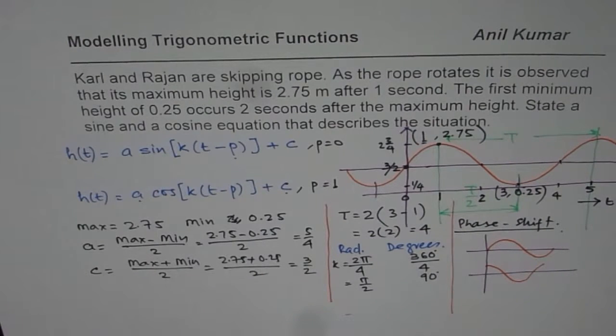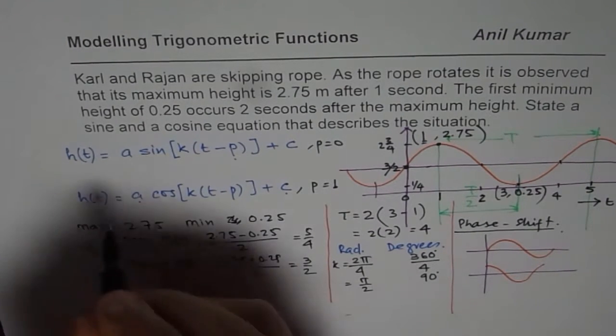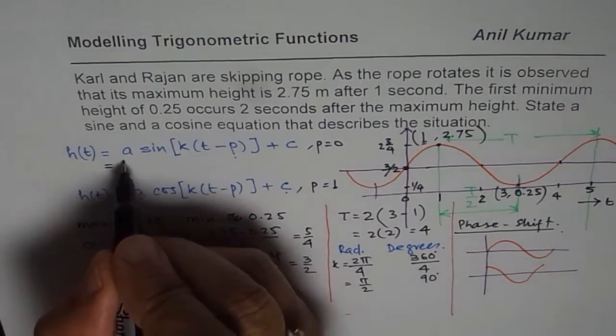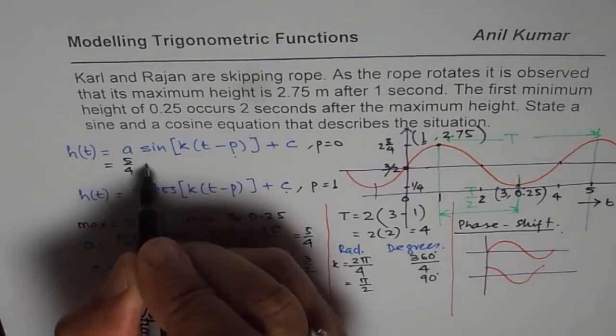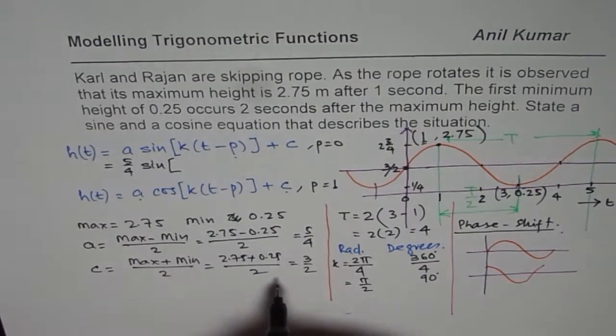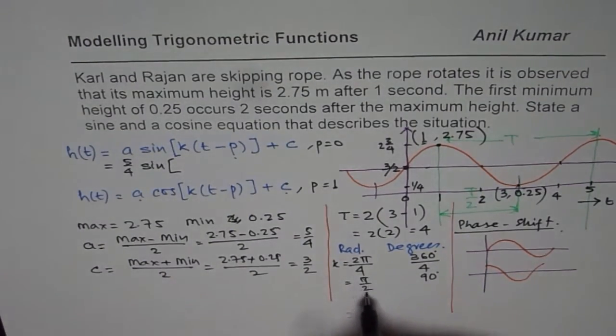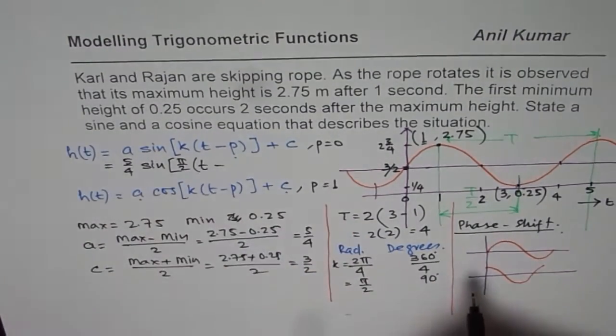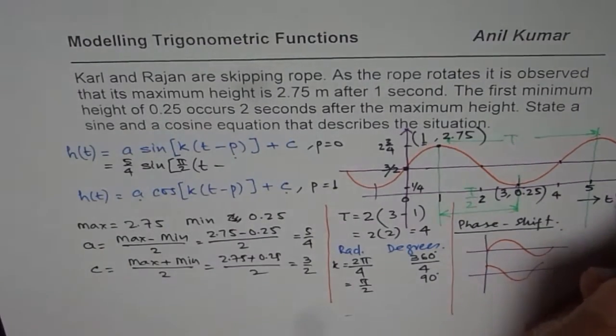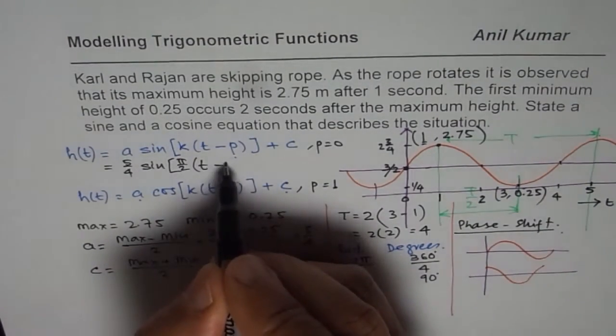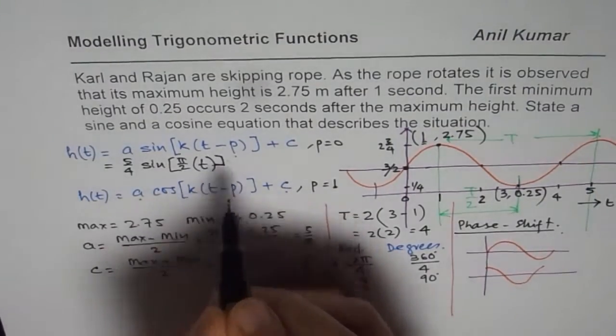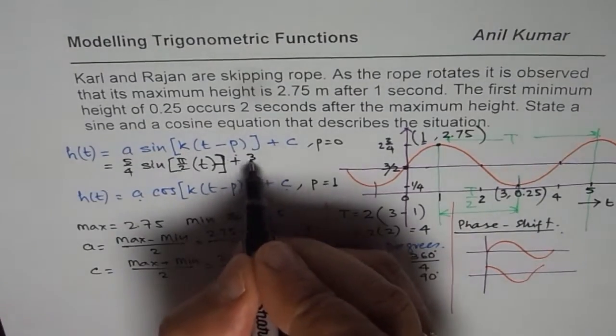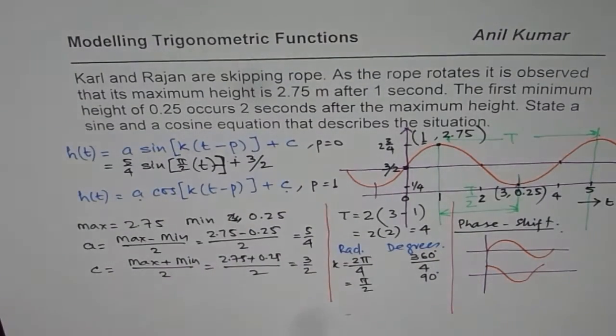So we got all the values now, and we are in a position to write equations. We get h(t) equals the amplitude of 5 over 4, sine, K value is, if I am writing in radians, π over 2, t. Phase shift is zero. And plus C is 3 by 2 for us. So that is the sine wave model.